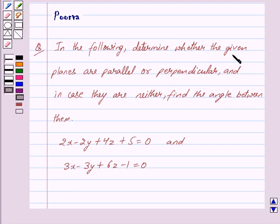In the following, determine whether the given planes are parallel or perpendicular, and in case they are neither, then find the angle between them. The planes are 2x minus 2y plus 4z plus 5 equals 0 and 3x minus 3y plus 6z minus 1 equals 0.